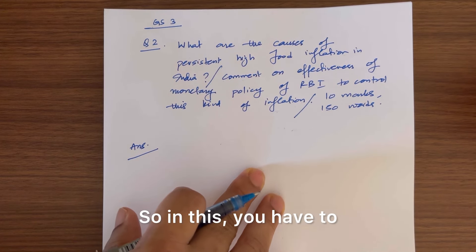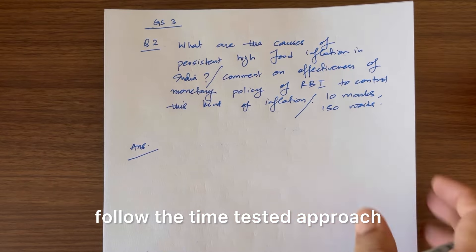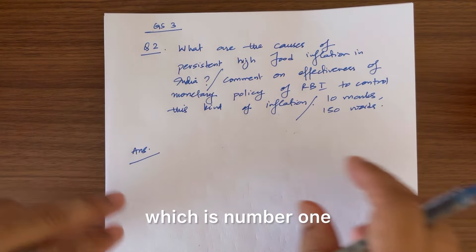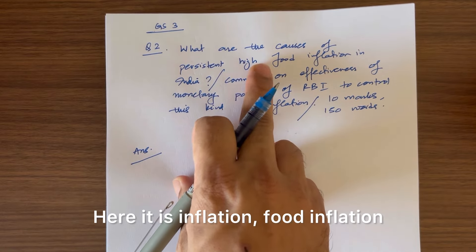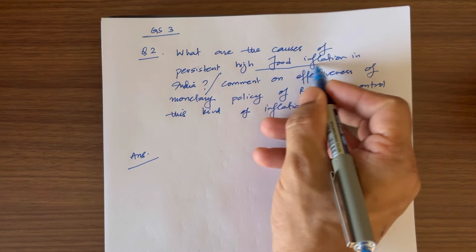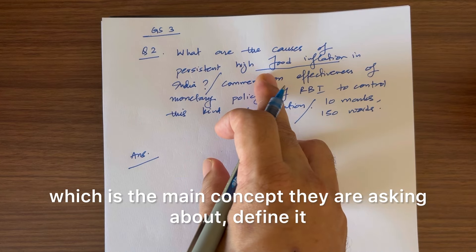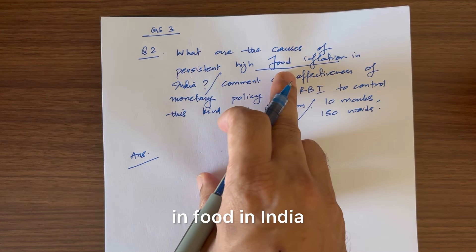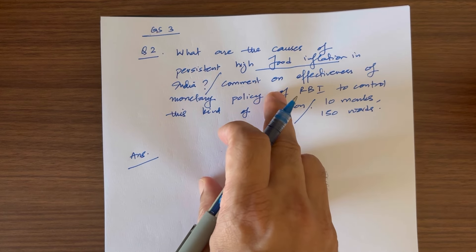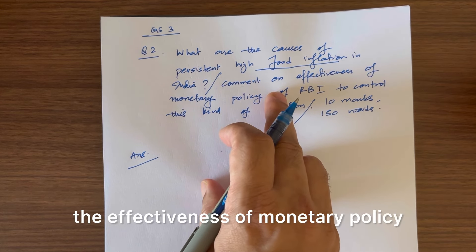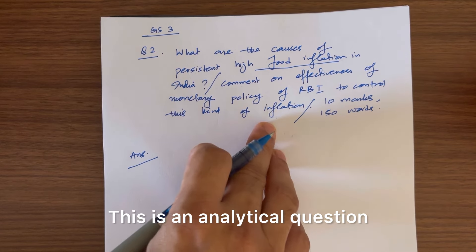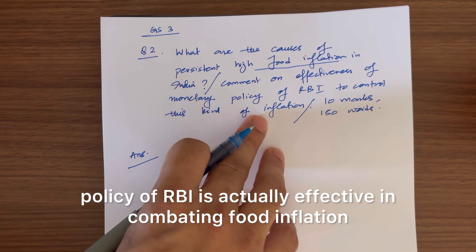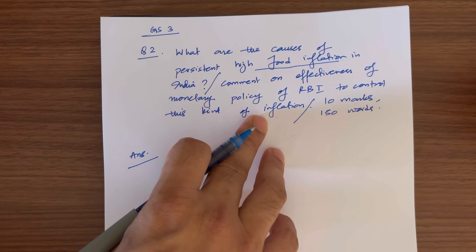In this, you have to follow the time-tested approach that I have mentioned in my book also, which is number one: define the main concept that is asked in the question. Here it is inflation, food inflation, which is the main concept they are asking about. Define it, then provide the causes of this high inflation in food in India. And then third, you have to talk about the effectiveness of monetary policy that RBI uses to control this inflation. This is an analytical question because now they are asking you whether monetary policy of RBI is actually effective in combating food inflation.